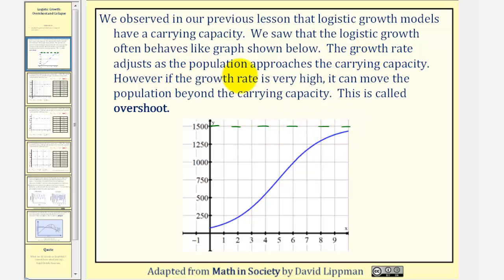The growth rate adjusts as the population approaches the carrying capacity. However, if the growth rate is very high, it can move the population beyond the carrying capacity. This is called overshoot.